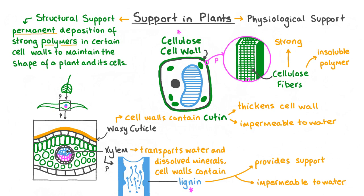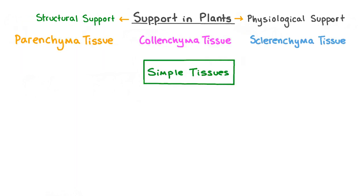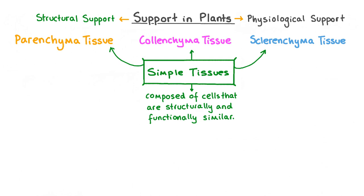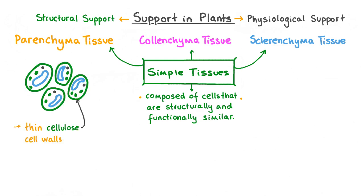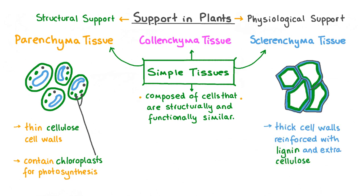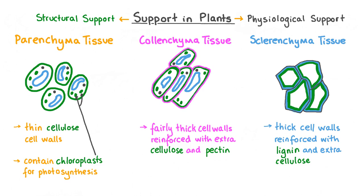Lignin and cellulose can also be incorporated into cell walls in various other parts of the plant. There are three main types of simple tissues in plants: parenchyma tissue, colenchyma tissue, and sclerenchyma tissue. Parenchyma cells typically have thin cell walls made up of cellulose and tend to contain many chloroplasts to carry out photosynthesis. Sclerenchyma cells have thicker cell walls reinforced with lignin and extra cellulose, and are generally found in non-growing parts of the plant to add structural support — for example, in the walls of xylem vessels. Colenchyma cell walls are reinforced with extra cellulose and sometimes additional substances like pectin, typically in young stems, and colenchyma is far more flexible than sclerenchyma.